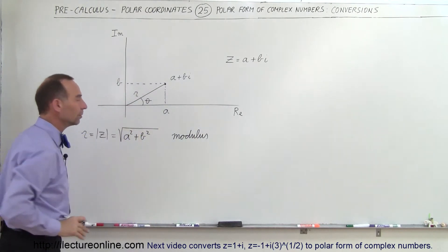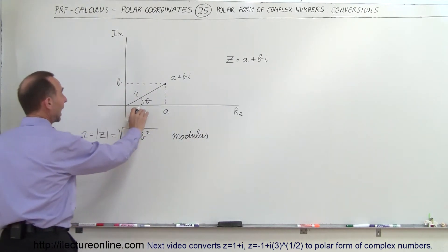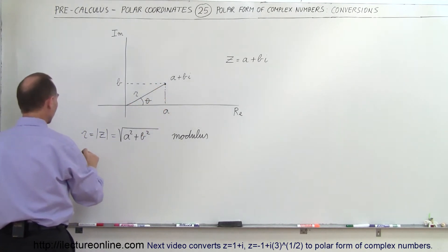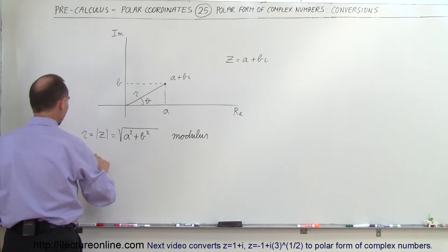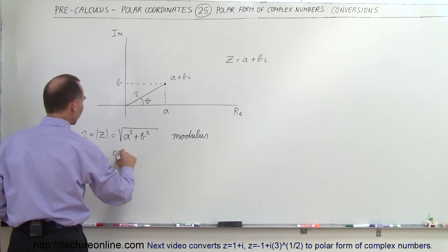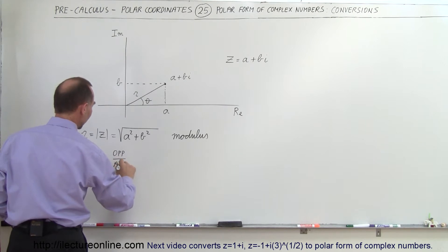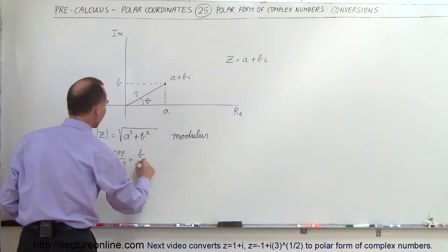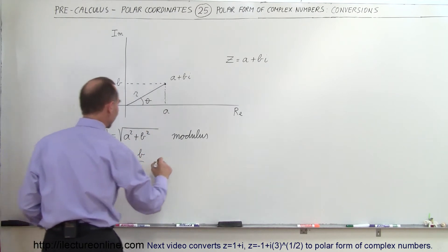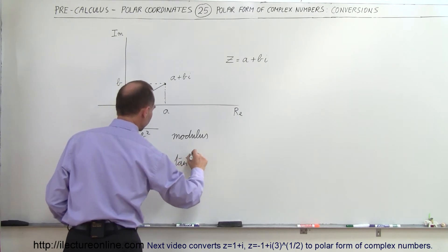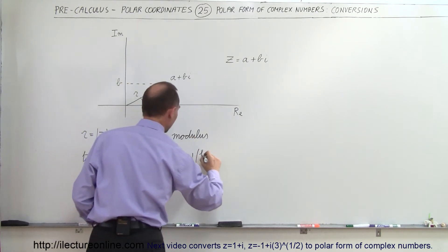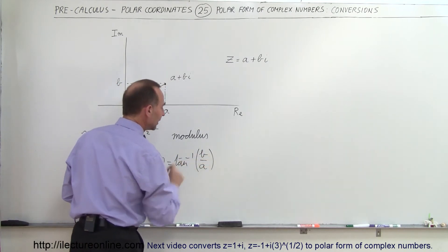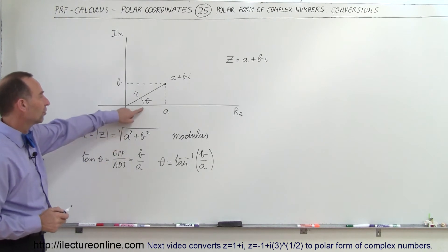Now how do we find the angle? To find the angle, we can say that the tangent of this angle is equal to the ratio of the opposite side divided by the adjacent side. So the tangent of angle theta equals B over A — the opposite side is B and the adjacent side is A. Therefore theta is equal to the arc tangent of B divided by A, which is the imaginary part divided by the real part.